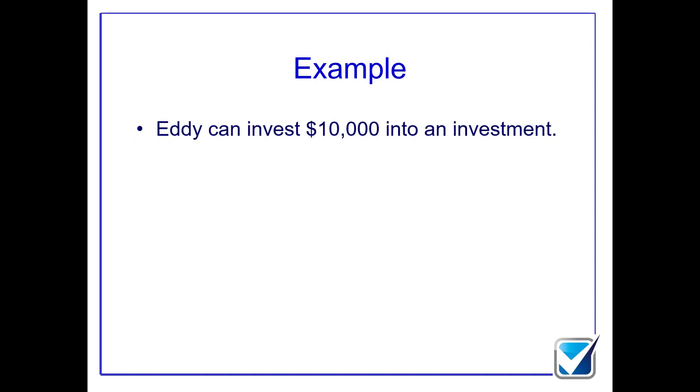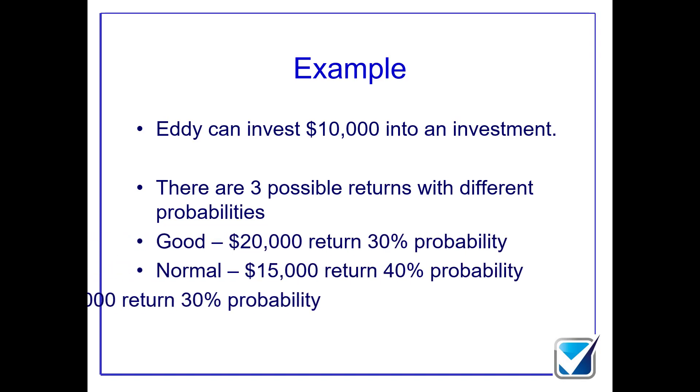Eddy has the potential to invest $10,000 into a new investment that will generate returns. We're not exactly sure what the level of returns will be, but we know it's potentially good, normal, or poor. If good, we get a $20,000 return with 30% chance. Normal: $15,000 return, 40% chance. Poor: $5,000 return, 30% chance.